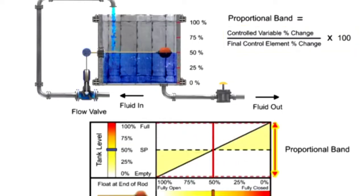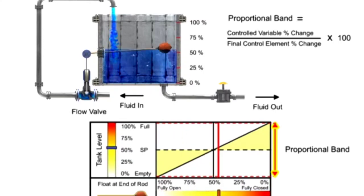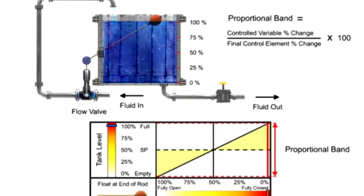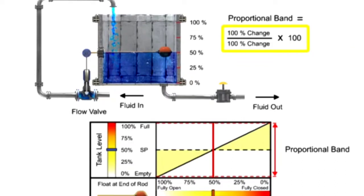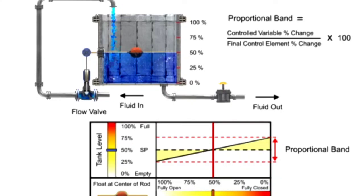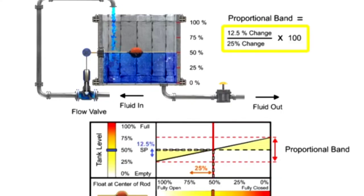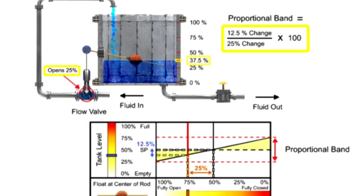The width of the proportional band determines how much of a controlled variable change is required to cause the final control element to move by a determined amount. By placing the float on the end of the rod, the fluid level has to change 100% to cause the final control element to change 100%. By placing the float at the center of the rod, the fluid level has to change 12.5% to cause the final control element to change 25%, reducing the width of the proportional band by half.